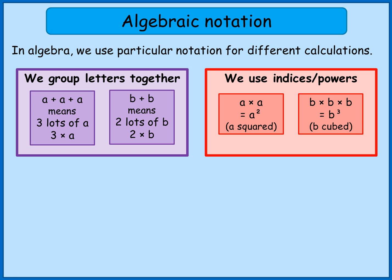Very importantly, a really common mistake that people make is rather than writing a times a is a squared, they write a times a is 2a. That's wrong because 2a means two lots of a. It doesn't mean a squared.